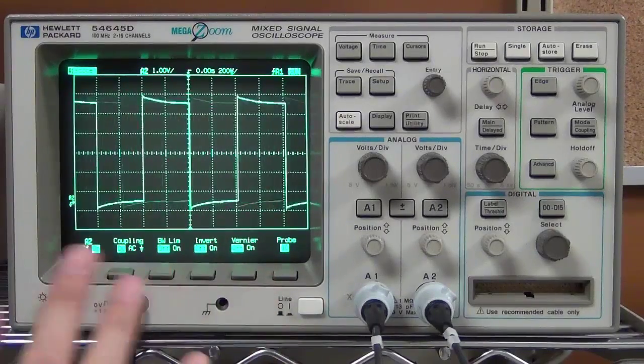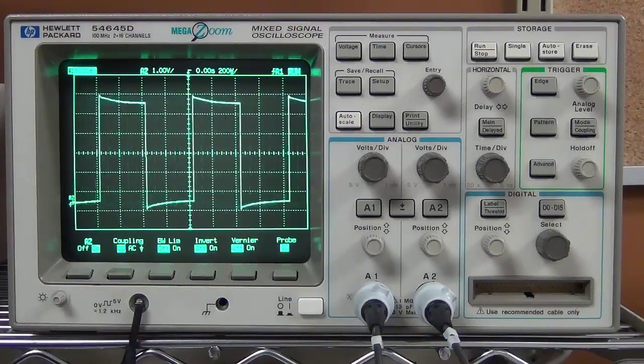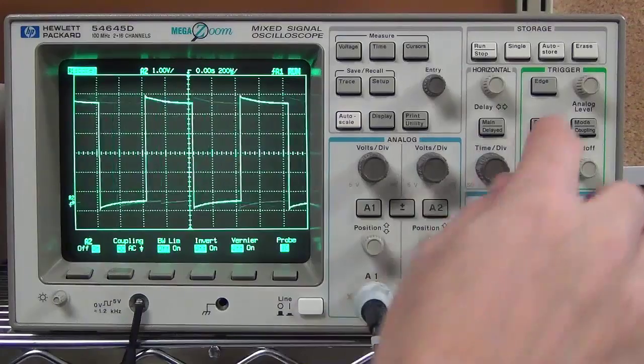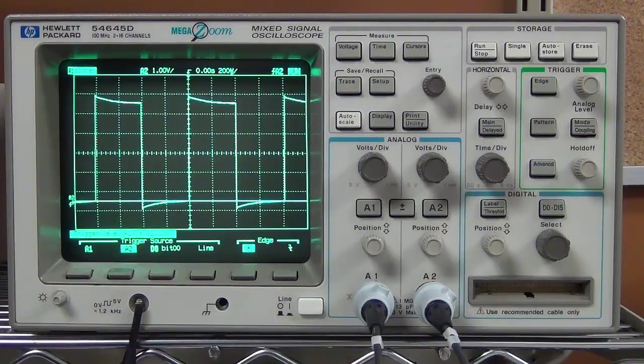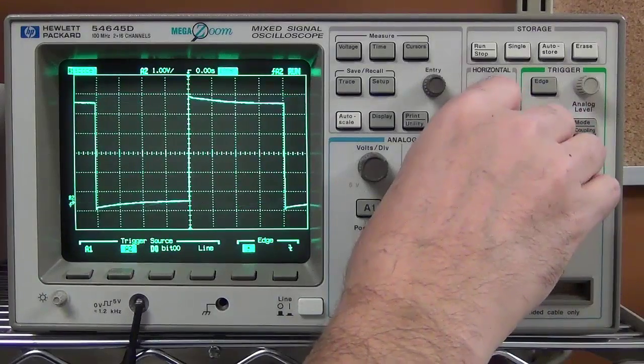Now again, the wave is not stable because we're triggering from channel one, and my signal's on channel two. So we're going to hit the edge button again, change the trigger to channel two. That will stabilize it.